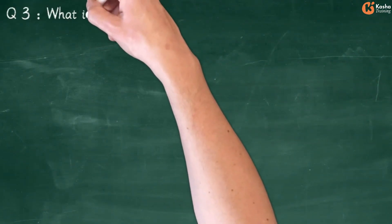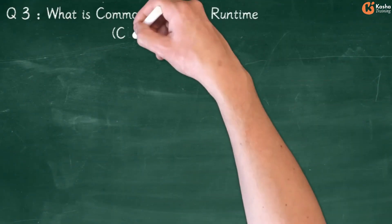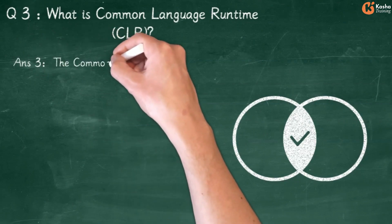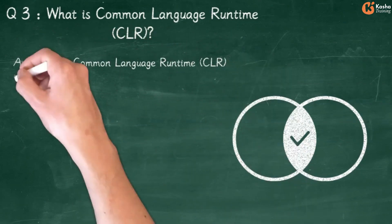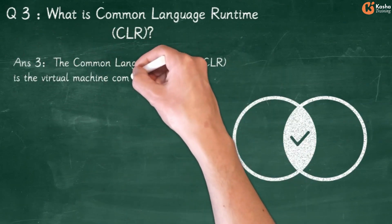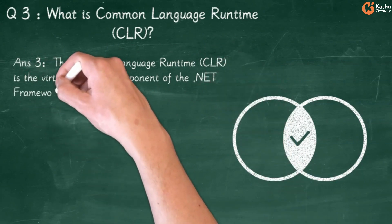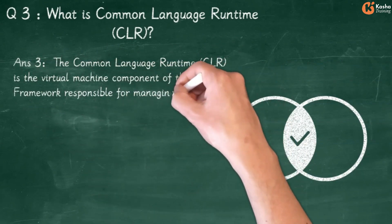Question 3: What is Common Language Runtime (CLR)? Answer 3: The Common Language Runtime (CLR) is the virtual machine component of the .NET Framework responsible for managing code execution.